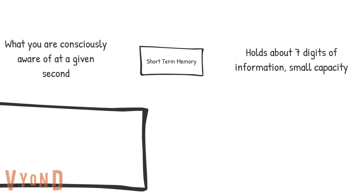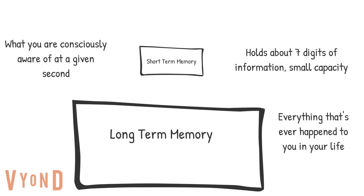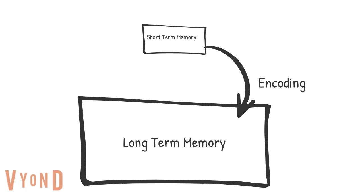On the other hand, your long-term memory holds a ton of information. In fact, everything that's ever happened to you in your life is stored in your long-term memory. The process of taking a memory from your short-term memory and storing it into your long-term memory is called encoding. And the process of taking an old memory from your long-term memory and bringing it to your consciousness or awareness or your short-term memory is called retrieval.